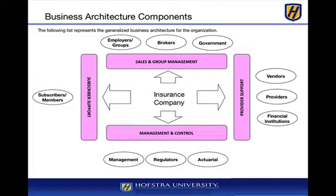Subscribers might have systems for explanation of benefits, coordination of care, disease management, and personal health records. On the right side, providers, vendors, and financial institutions for electronic funds transfer can look at claims or get on the network. On the vertical axis we have sales and group management for managing roster roles and acquiring new members, government agencies for reporting, and management and control functions dealing with regulators, management, and actuarial — a very data-centric organization that takes data from claims as well as external data to underwrite claims.